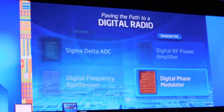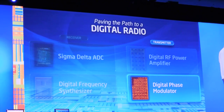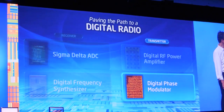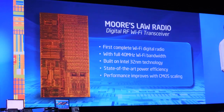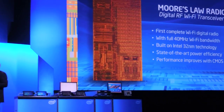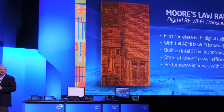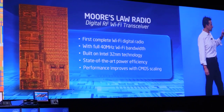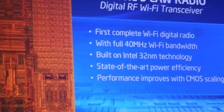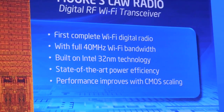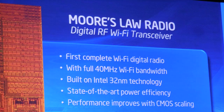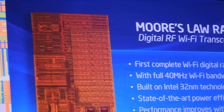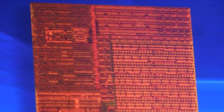Now we've got all the blocks — we actually have the complete radio. This is the first complete digital Wi-Fi radio that we have developed. It operates up to the more demanding 40 MHz Wi-Fi requirements and has been implemented in a 32 nm Intel process. The power efficiency is already on par with the best analog designs we could find in the literature. And we know our radio will keep improving because it's all flip-flops, transistors, and switches — while analog radios will not improve. It is already on par. I've waited 10 years for this moment, Yorgos.